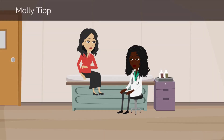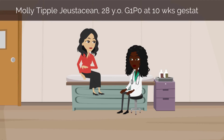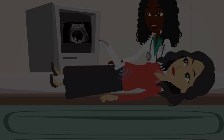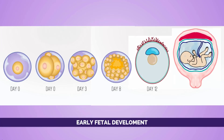Let's meet our patient, Molly. Molly is a 28-year-old Gravida 1 who presents to your clinic for her initial obstetric intake visit at 10 weeks gestation. When you perform her ultrasound, you see two different heartbeats. Molly is pregnant with twins! In order to best understand the physiology of twinning, it's important to recall the process of early fetal development.